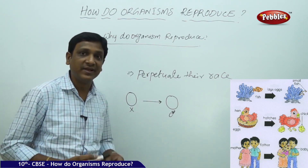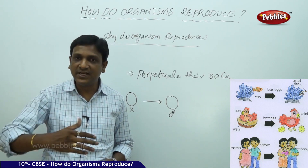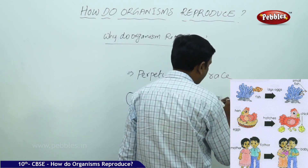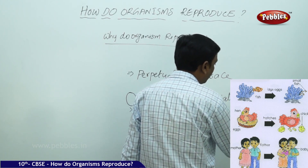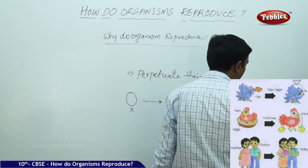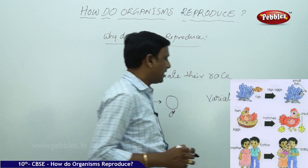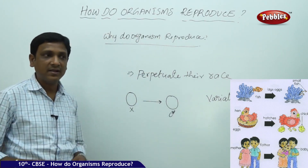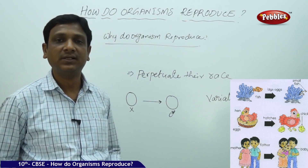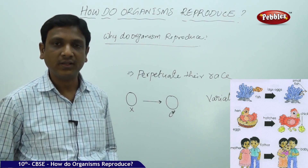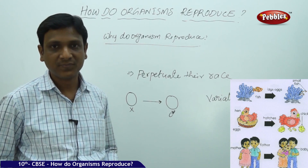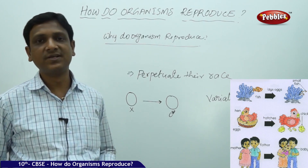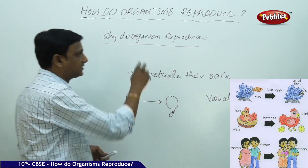Reproduction brings variations — small changes in organisms. These variations are important because they are the basis for the evolution of species. If these variations did not exist, this many species would not have evolved — even human beings might not have evolved into Homo sapiens if there were no variations. And there are no variations if there is no reproduction. That is the importance of reproduction and why organisms reproduce.